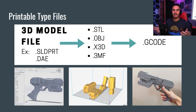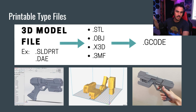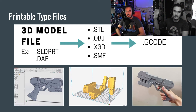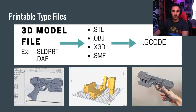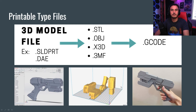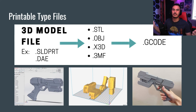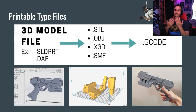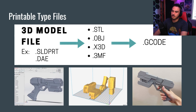Once you have your STL file, you put that into the slicing program we use known as Cura. The CraftBots use their own slicing software called Craftware, and I will be going over Craftware at the end after the Cura tutorial, so stay tuned for that. Cura is used on all the other 3D printers. When you import your STL into Cura, you can take the objects, line them up, and then hit Slice.